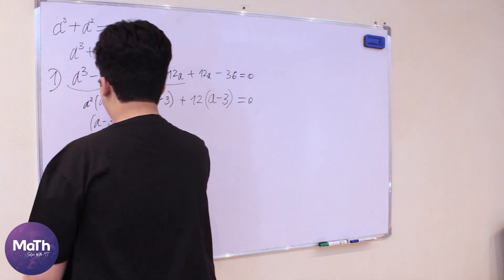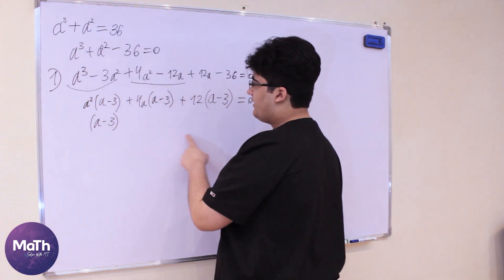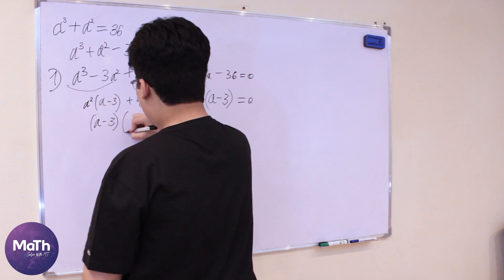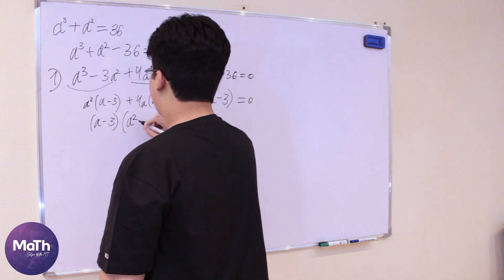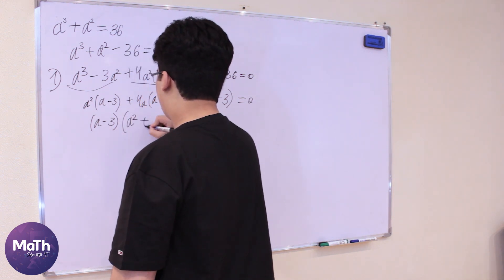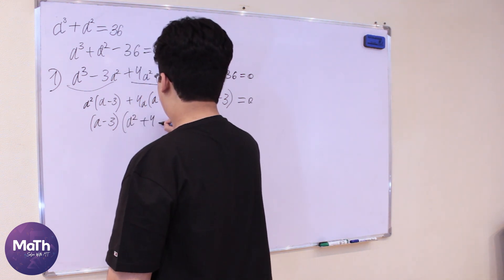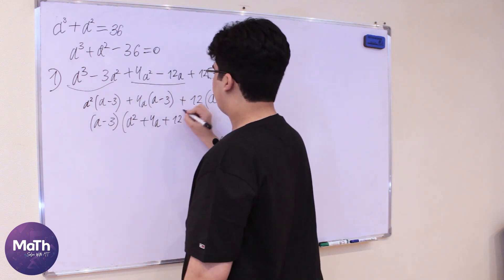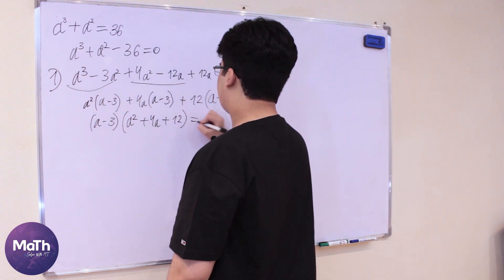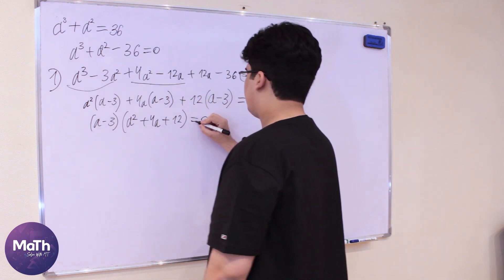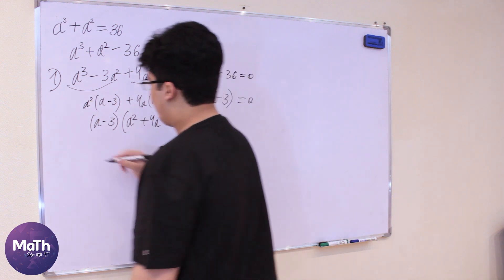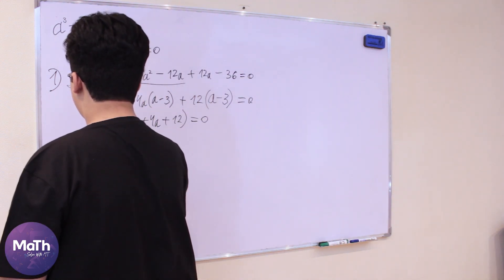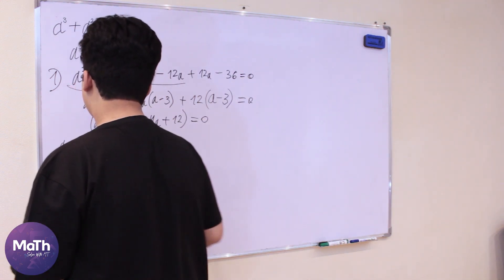And we take 12 out of the last part, giving 12(a - 3) again, equal to zero. So let's factor out (a - 3), leaving us with (a - 3)(a² + 4a + 12) = 0. Here we have a real solution: a = 3.